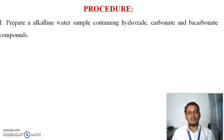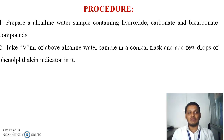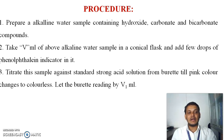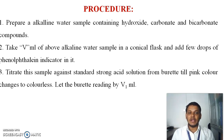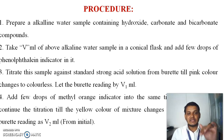The procedure is simple. First, prepare an alkaline water sample containing hydroxide, carbonate, and bicarbonate compounds. Take 20 mL of the alkaline water sample in a conical flask. Add 2 to 3 drops of phenolphthalein indicator — the solution turns pink. Titrate this pink color sample against a standard strong acid (HCl or H₂SO₄). The end point is pink changing to colorless. Note this burette reading as V1 mL, representing complete neutralization of hydroxide and one-half neutralization of carbonate.